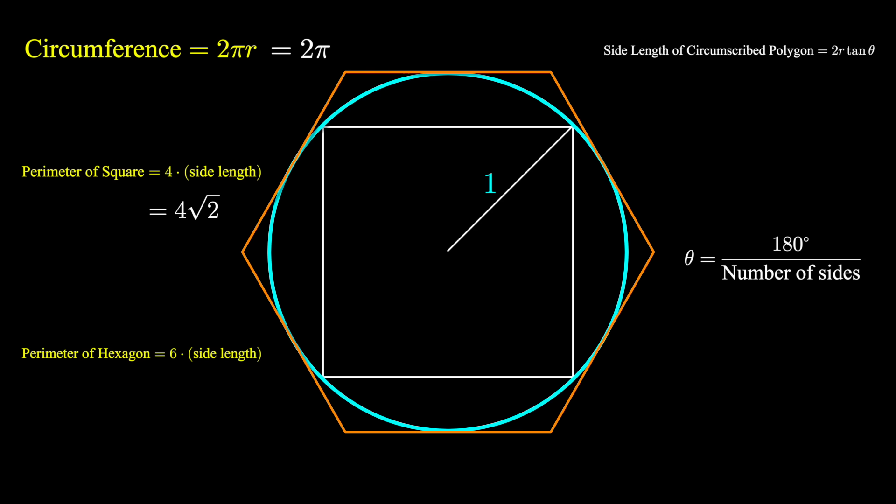So in this case, 180 degrees over 6 sides, theta will be 30 degrees, r the radius is still 1, and the side length of this hexagon is 2 tangent of 30 degrees. Tangent of 30 is root 3 over 3, and so the side length of this hexagon is 2 root 3 over 3.